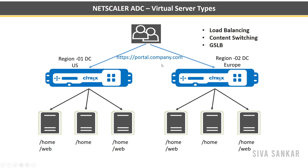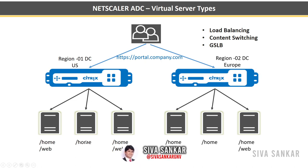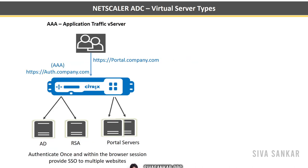The third type is content switching. You have portal.company.com with directories slash home and slash web. Servers one, two, and three have slash home, while only servers one and three have slash web. With normal load balancing, if a user hits server two for slash web, the page is not there and they can't access it. Content switching solves this: you create a separate load balancing virtual server for slash home pointing to servers one, two, and three, and for slash web pointing to only servers one and three.